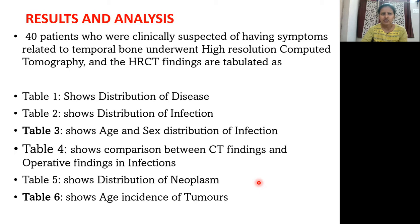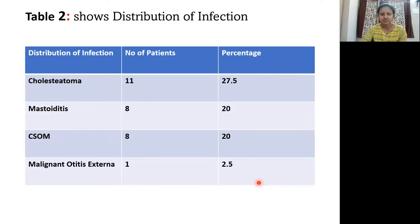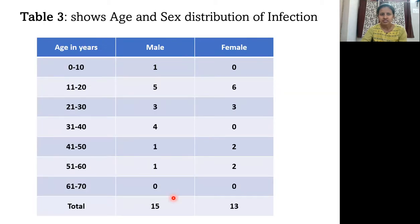Results and analysis. 40 patients were clinically suspected of having symptoms related to temporal bone and underwent HRCT, and the findings are tabulated. Table 1 shows the distribution of disease: of all the patients, infections constitute 70%, tumours 25%, and congenital anomalies 5%. The table showing the distribution of infection: cholesteatoma is noted in 11 patients, mastoiditis in 8 patients, CSOM in 8 patients, and malignant otitis externa in 1 patient.